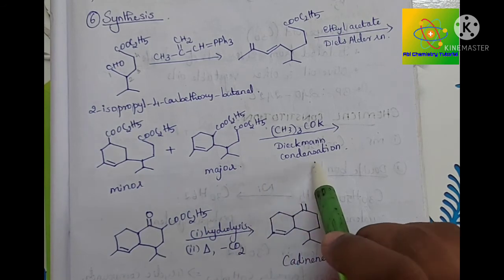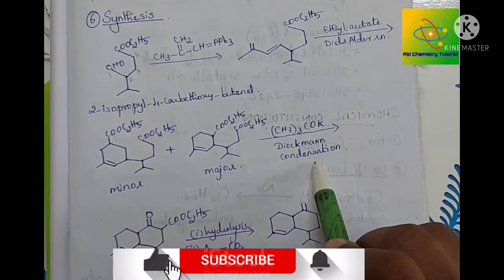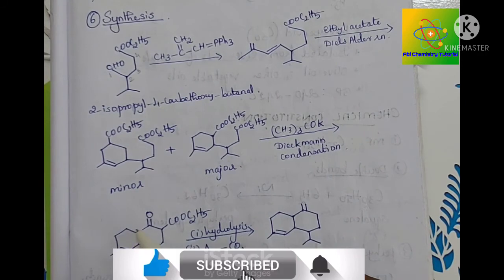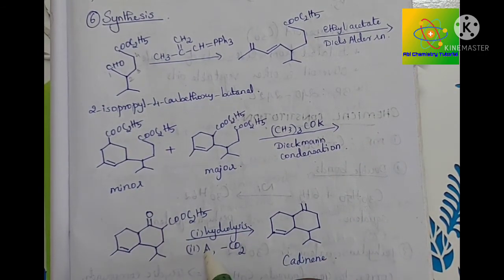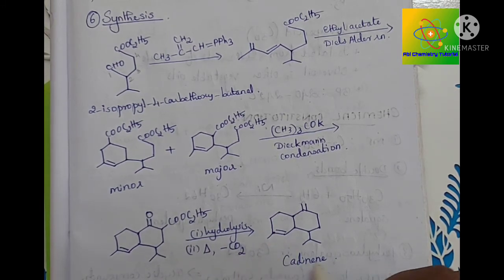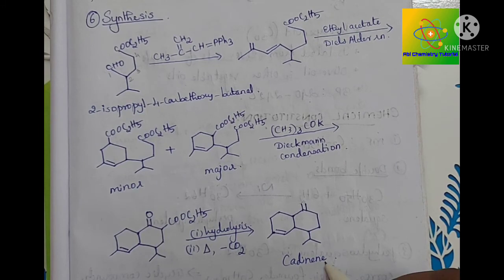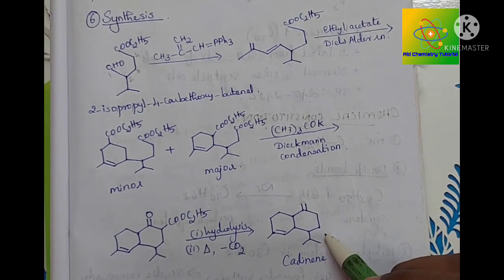Now we are going to do Dieckmann condensation and we get two cycles, two rings. This on hydrolysis and then heating removes a molecule of carbon dioxide to give the structure of cadinine.